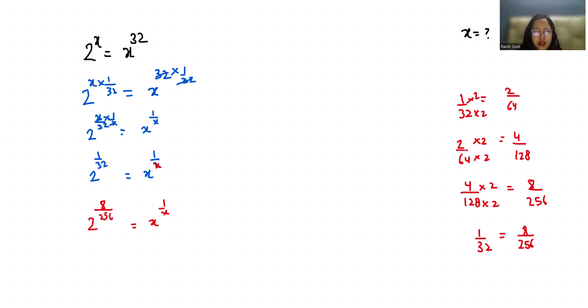Now I can write 2 power 8 times 1 by 256 equals x power 1 by x. According to exponent rule, 2 power 8 times 2 power 1 by 256 equals x power 1 by x.